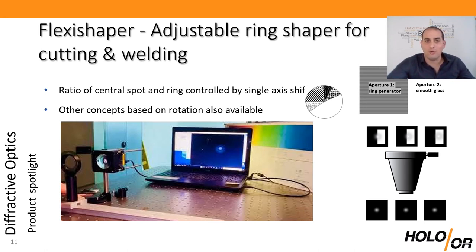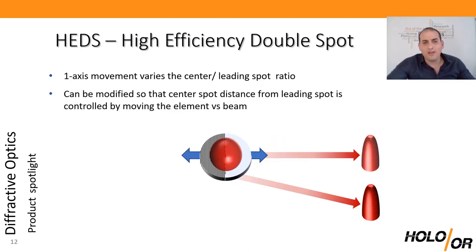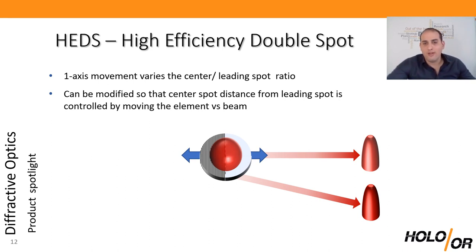Other types of adjustable DOEs are high-efficiency double spot splitters — diffractive prisms that allow one to play with the ratio of power between the two split orders. What we call half-heads have a diffractive blaze grating on one side and a clear aperture on the other: half the light goes forward unaffected, the other half is deflected at a controlled angle. By moving the beam versus the aperture you can adjust the ratio of these two spots — highly useful for dual spot welding.